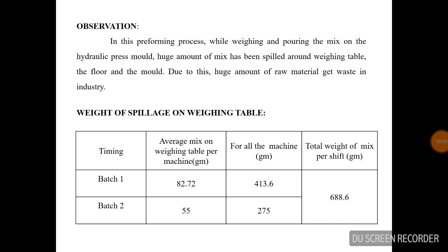Observation: In this preforming process, while weighing and pouring the mixer on the hydraulic press mold, a huge amount of mix has been spilled around the weighing table and the mold. Due to this, a huge amount of raw material gets wasted in industries. The table below represents the weight of spillage on the weighing table. The first column represents timing of batch 1 and batch 2, the second column represents average mix on weighing table per machine, the third column represents all machines, and the fifth column represents total weight of mix per shift. From the first batch, around 82.72 grams of average mix is spilled per machine and 413.6 grams for all machines, with a total for the first batch of around 688.6 grams.